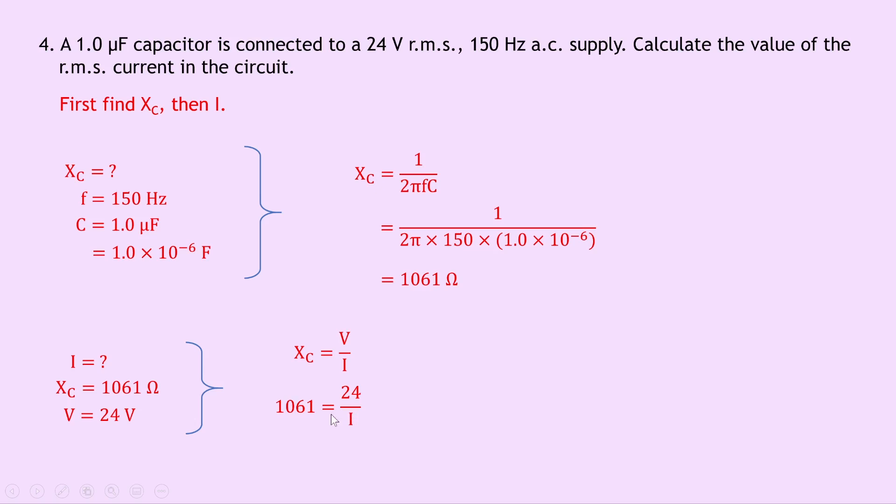And if you put that into your calculator, you should get an answer of 2.3 times 10 to the minus 2 amps.